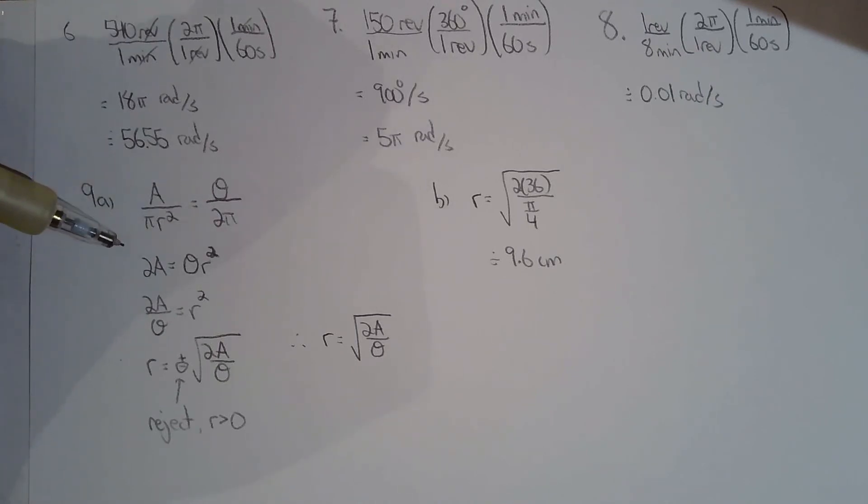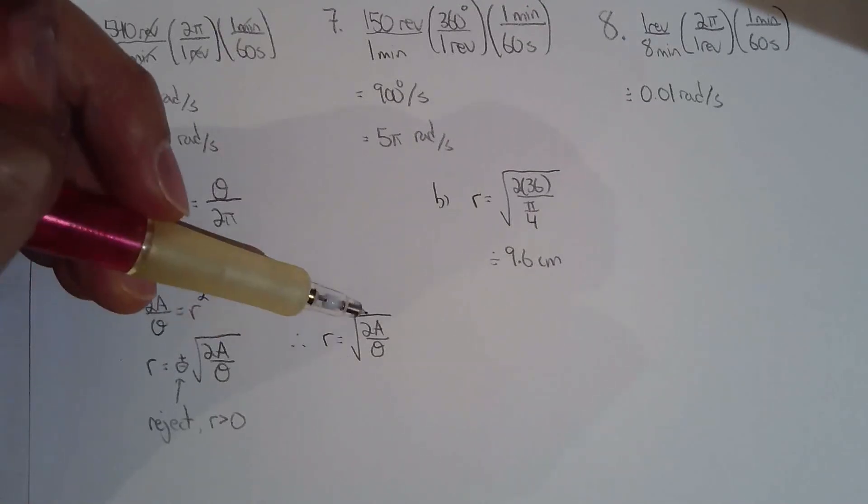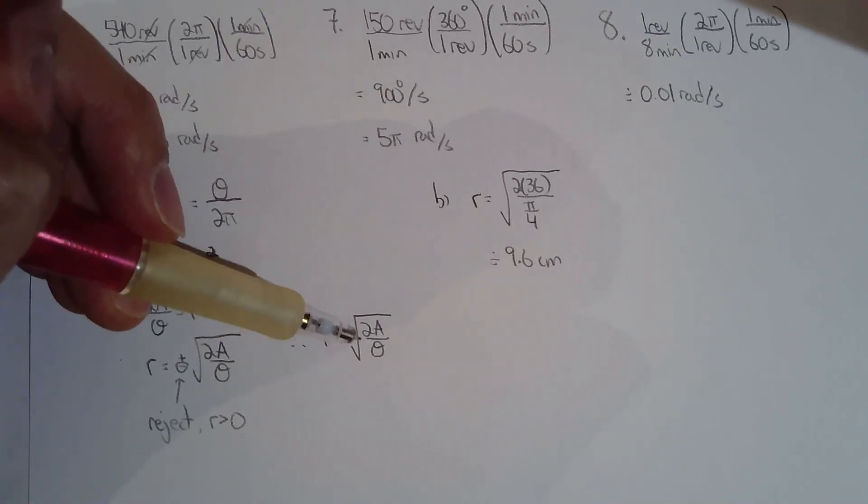We want to solve for the radius, so just rearrange. You multiply both sides by the lowest common denominator, which is 2 pi r squared, and then you have this beautiful relationship: 2a equals theta r squared. Divide both sides by theta, square root both sides—you get plus minus, but your radius must be positive. So it's quite simply the square root of 2a over theta.